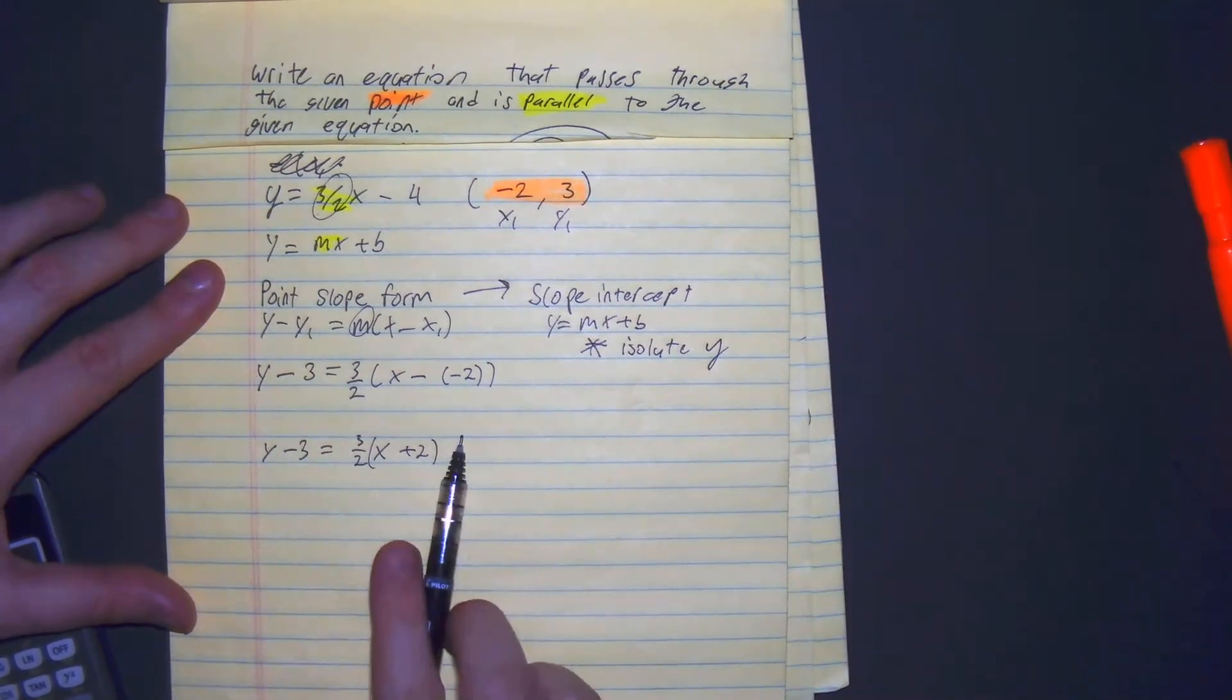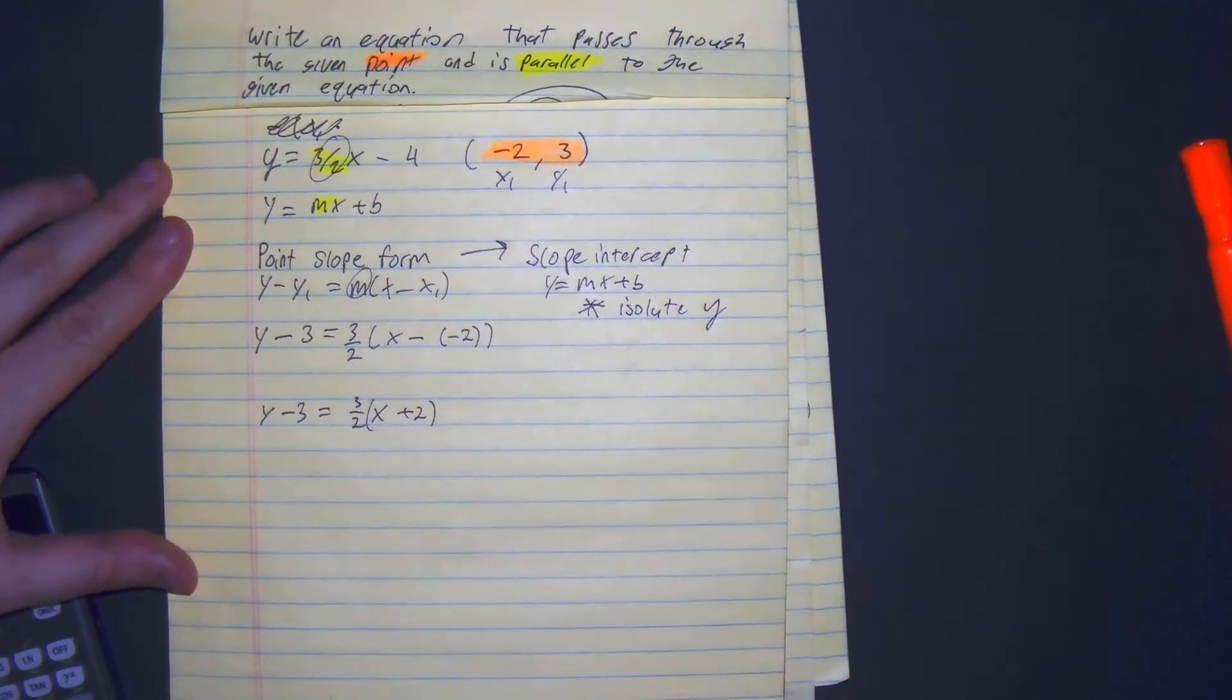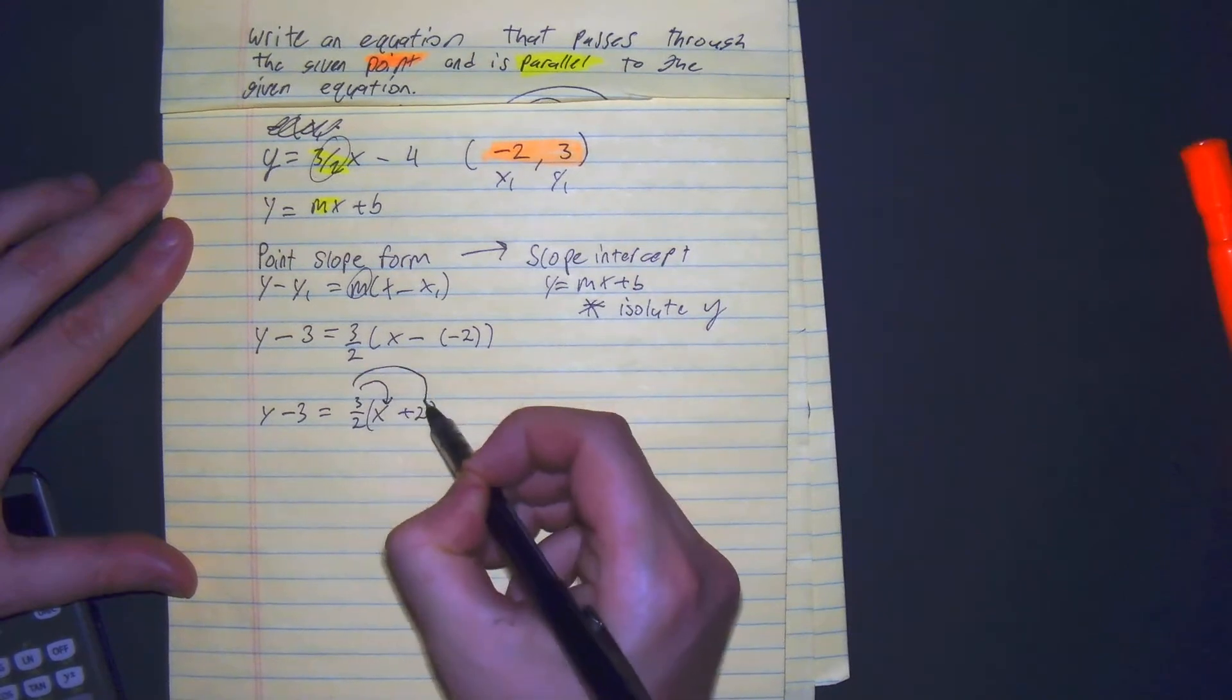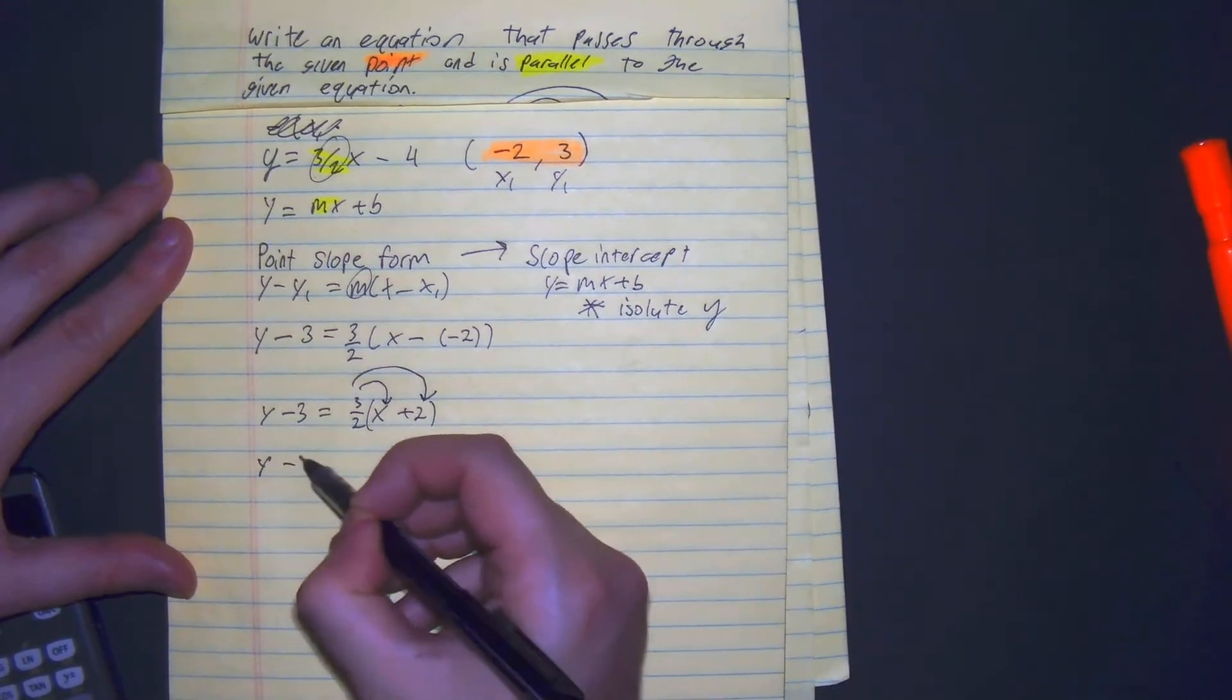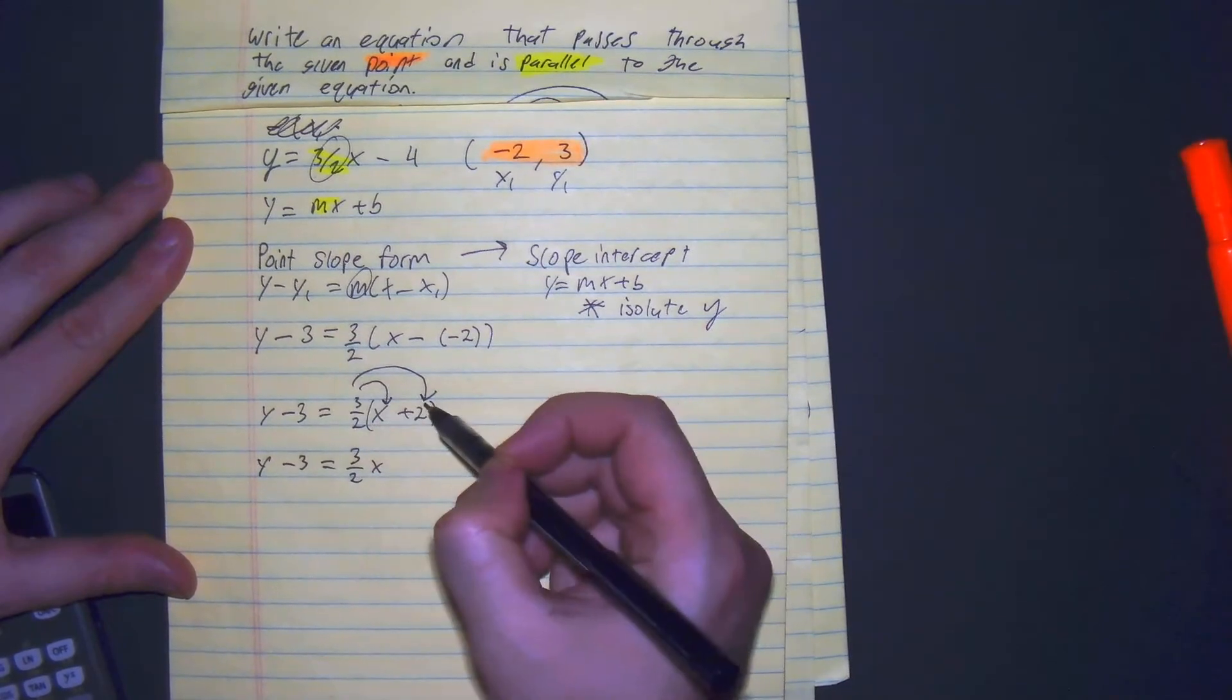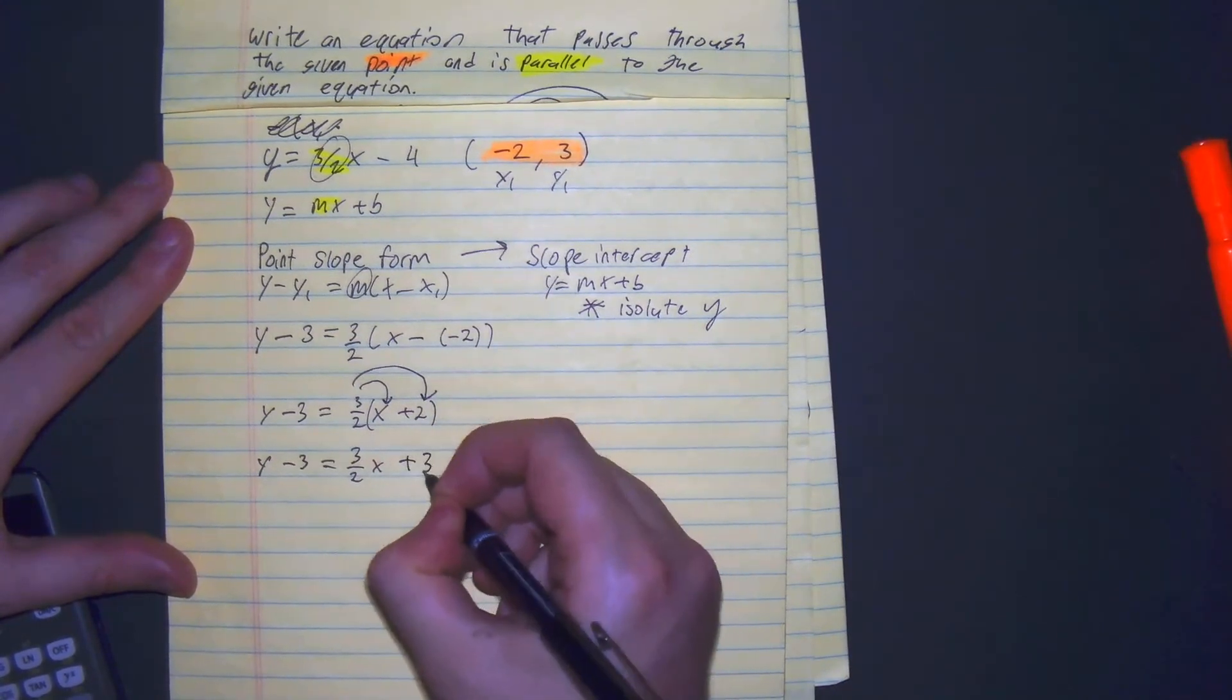So we can add 3 and then distribute. Let's finish this up. We're going to distribute first. y minus 3 equals 3 over 2 x; 3 times 2 is 6, 6 divided by 2 is 3, so we get plus 3.